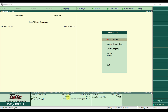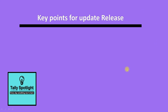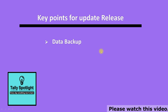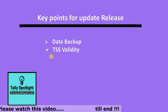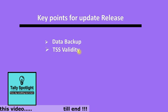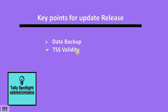Now let us see the key points for updating to the latest release. Before updating any latest release, you need to know some key points. First, data backup is mandatory before updating. Second, you need to check that your Tally software subscription is valid. If validity is present, you are eligible to update. If it is not valid, you need to renew the software subscription before you are eligible to update.